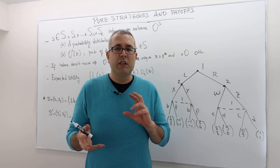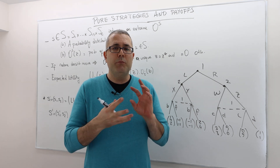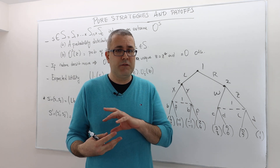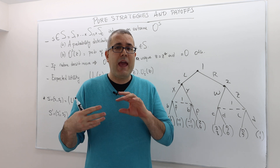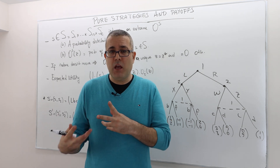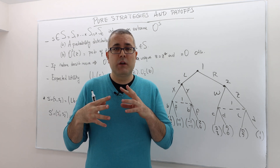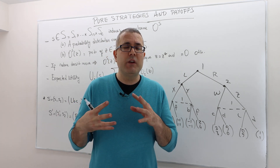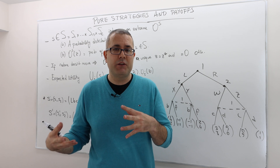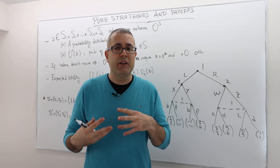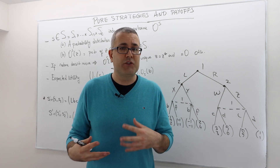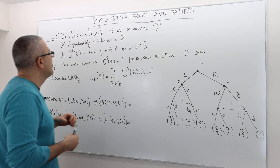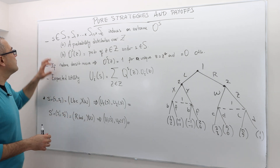What is the relationship between pure strategies in an extensive form game and payoffs or expected utilities? How can we calculate expected utilities once we're given a strategy profile? This is what we're going to do in this episode.